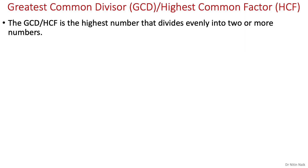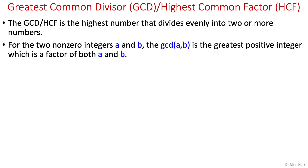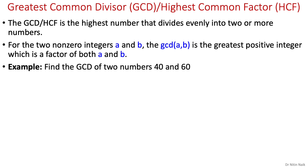This whole topic is based on the GCD. The GCD is the highest number that divides evenly into two or more numbers. For the two non-zero integers A and B, the GCD of A and B is the greatest positive integer which is a factor of both A and B. GCD is very useful in modular arithmetic and cryptography to evaluate several conditions which we will look at later. Let's look at an example.